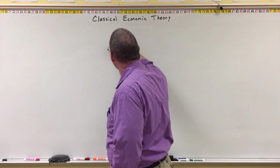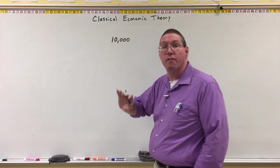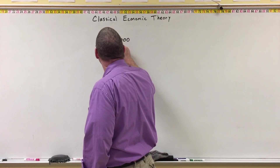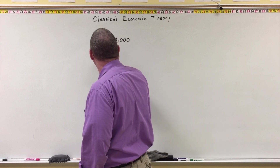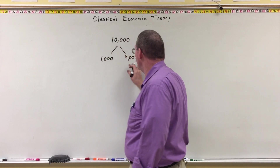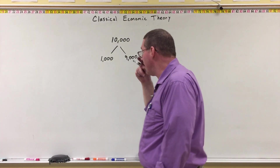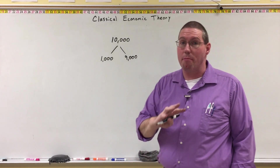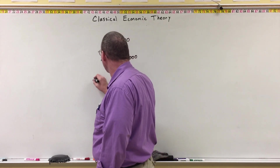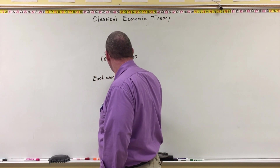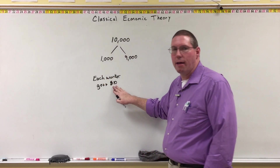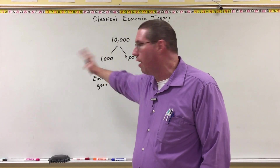Let's say that a business sells $10,000 worth of stuff. They sell $10,000 worth of stuff to buyers. And then let's say that most of that money goes to the owners of the business — only about $1,000 goes to the employees, and the other $9,000 goes to the owners. If you divide all this $1,000 up among all the laborers, let's say there were 100 workers, each worker only gets $10. So each of the workers only has $10 to spend, so they can't buy very much stuff out there in the economy.